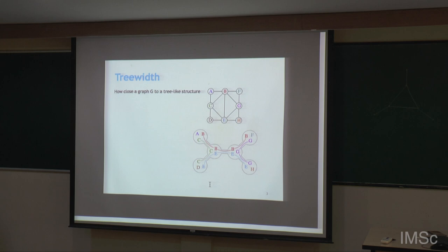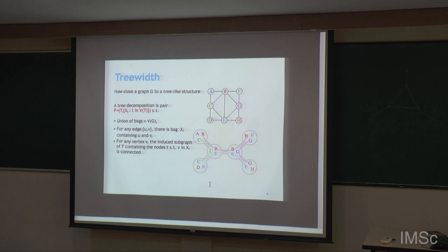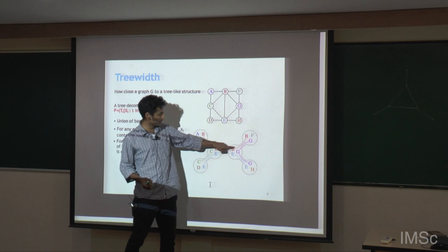A more formal definition: we have a tree and with every node some subset of vertices is associated. The union of bags equals V(G), and for every edge there is a bag which contains both endpoints. The third property is that for any vertex V, the nodes in the tree decomposition containing it should form a connected subtree.